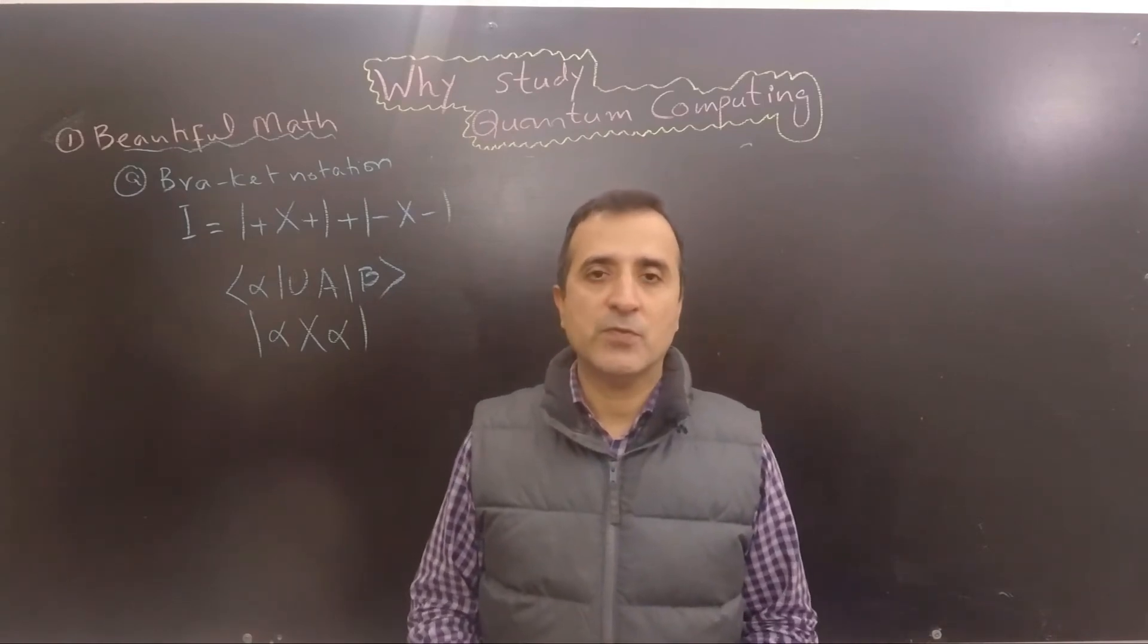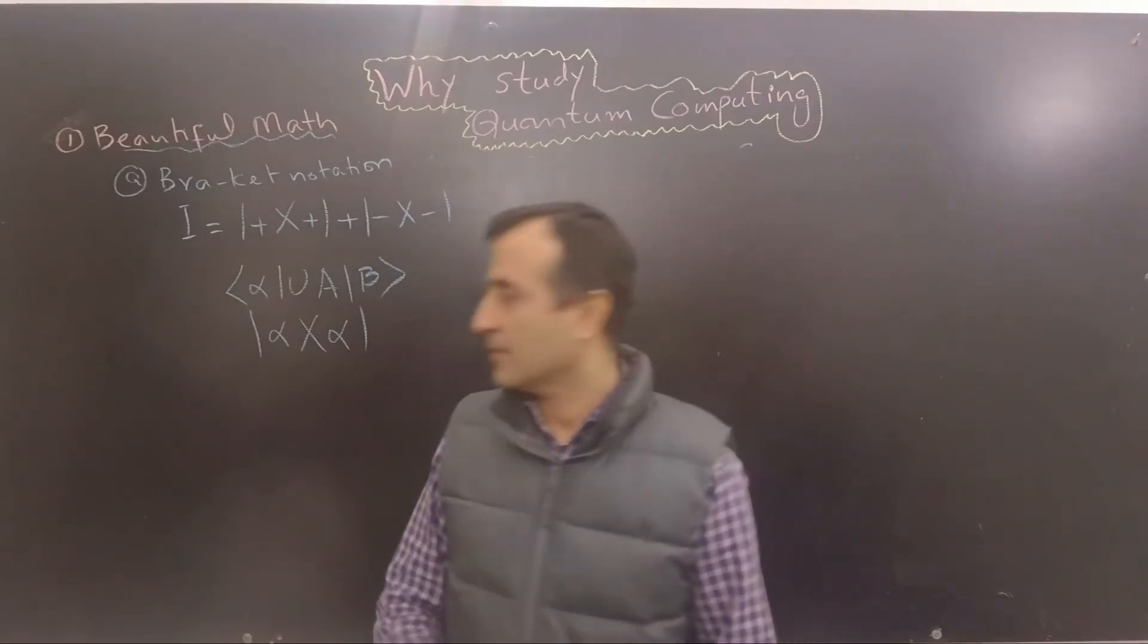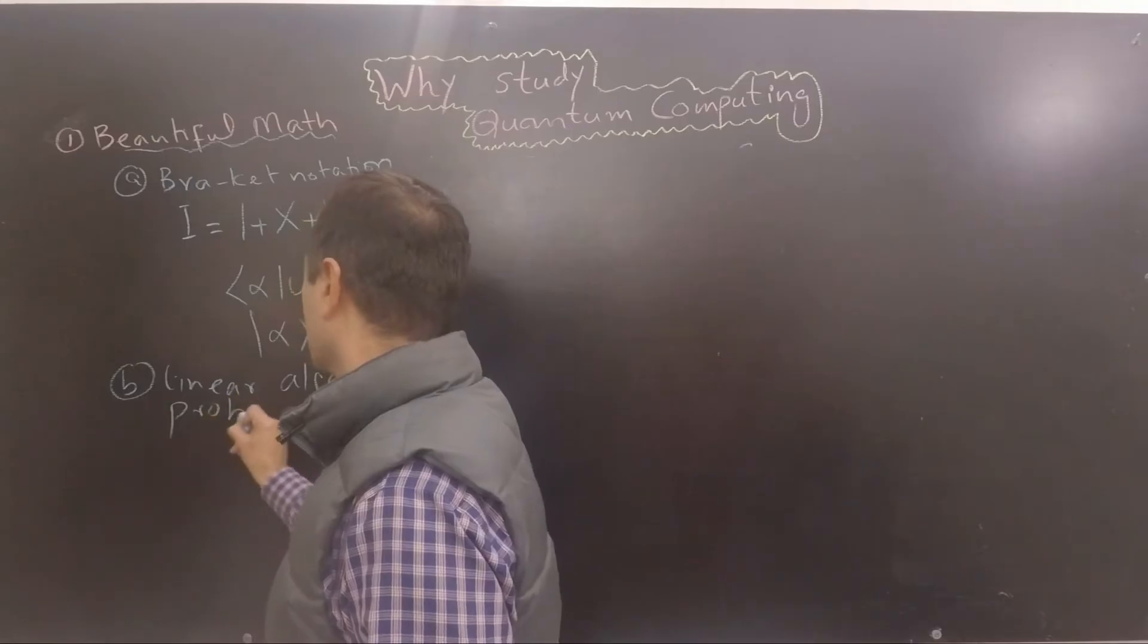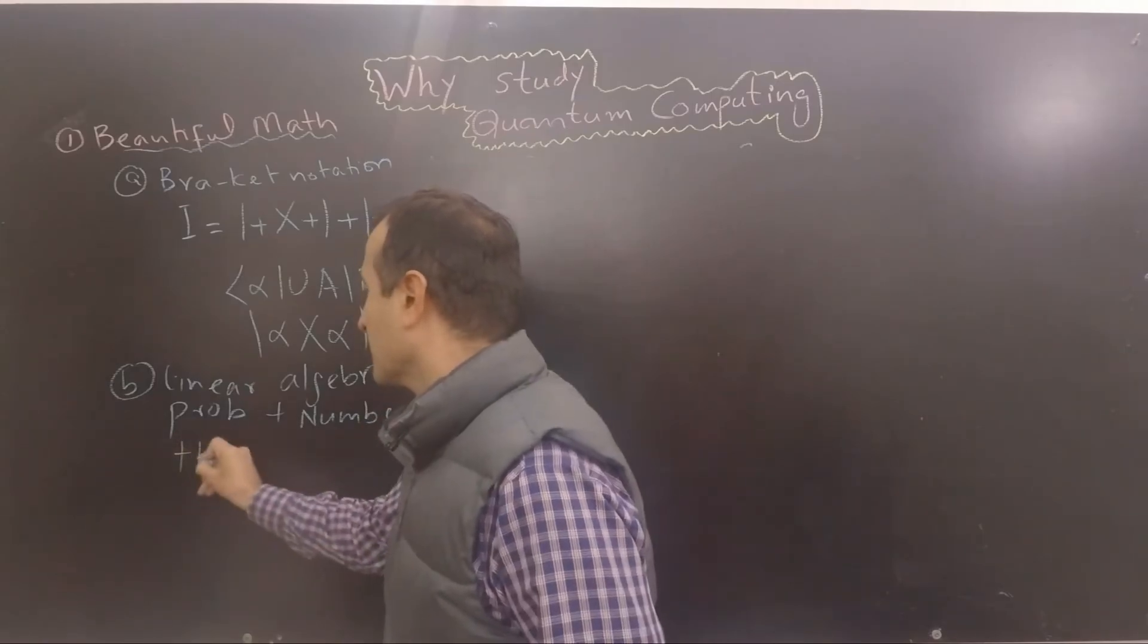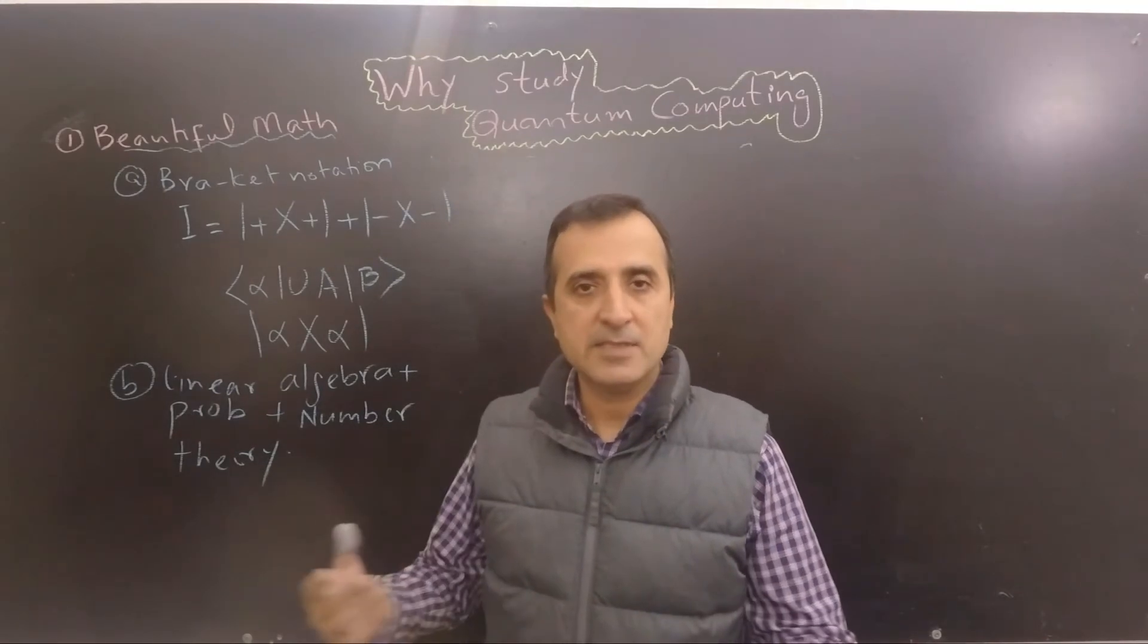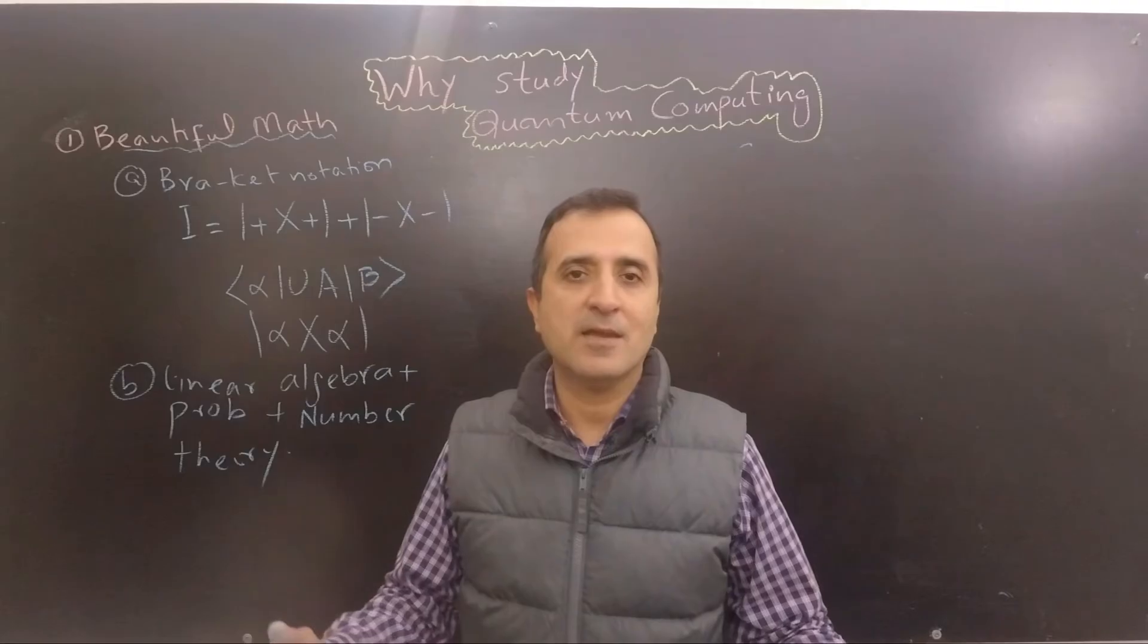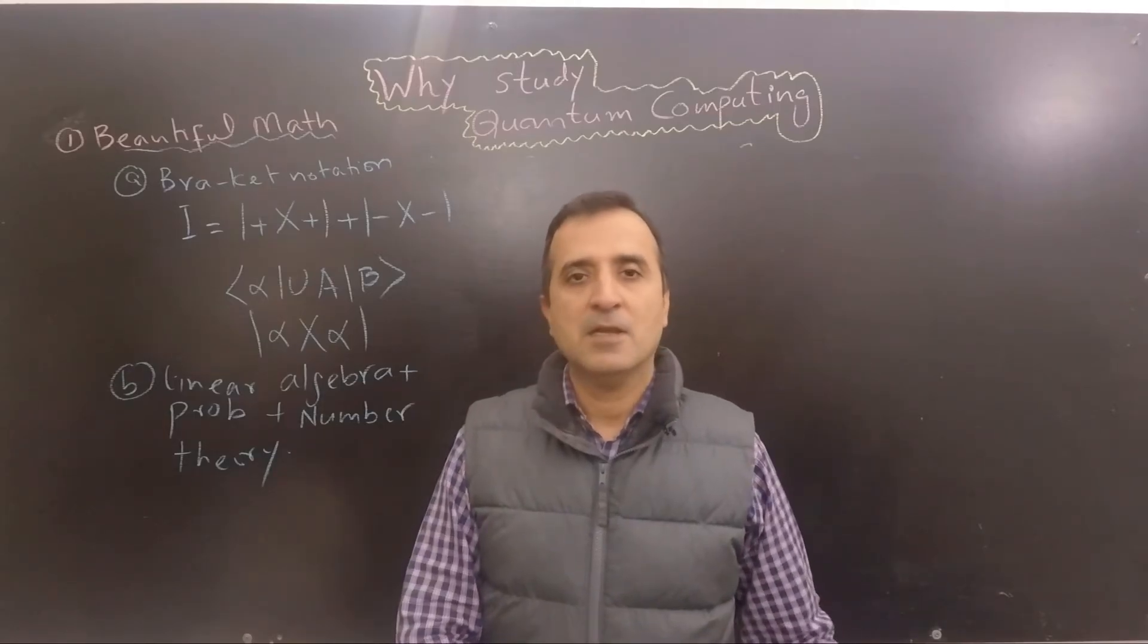Another reason that the math of quantum computing is beautiful is because it is based upon linear algebra, probability, and number theory. So quantum algorithms use the properties of matrices, relationships between matrices via Fourier transformation, eigenvector properties. And these things are liked by everyone. There is a saying that either you don't understand Fourier transformation or you love it. I hope that after this course you will be able to understand these concepts and love them.